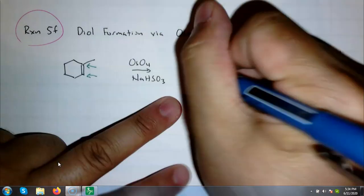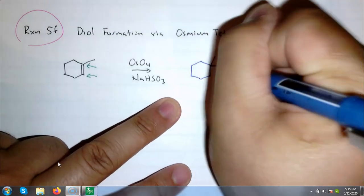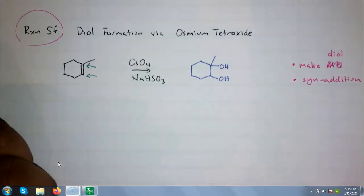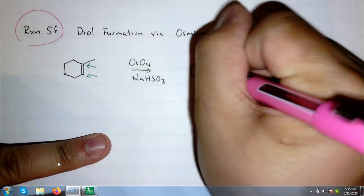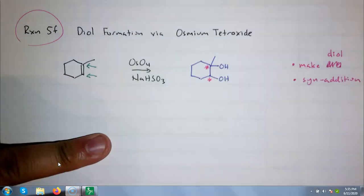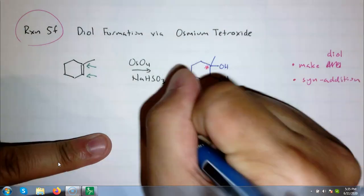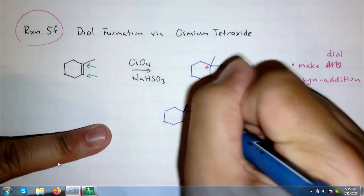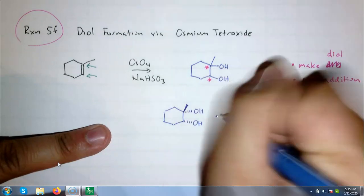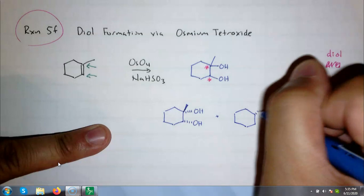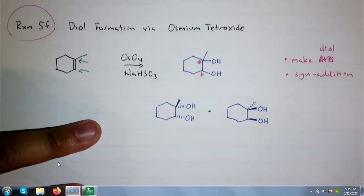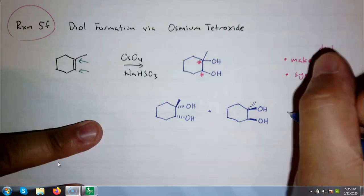I'm going to ask you to pause the video and you draw me the product based on that it makes a diol. And I should give you one more. It is syn addition. What I'm going to do when you unpause it is that I'm going to draw the molecule without stereochemistry, and if I think stereoisomers are made, I'm going to draw them underneath with the correct wedges and dashes. Draw me those products if you know them.